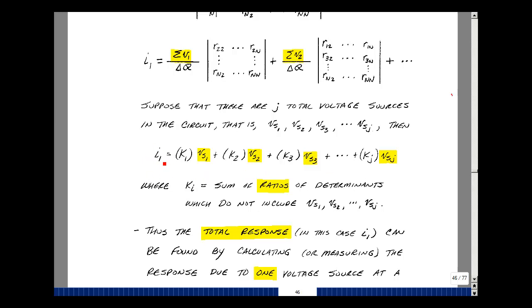Total response, I1, and once I know a mesh current, I can find any voltage or any current in my circuit, is found by adding up all these terms where I have each voltage source multiplied by a scalar. If I were to set all of these equal to 0 but 1, I can then find the term K1. And if I set all of them equal to 0 except V sub S2, then I could find K2, and so on down the line. And that's our property of superposition.